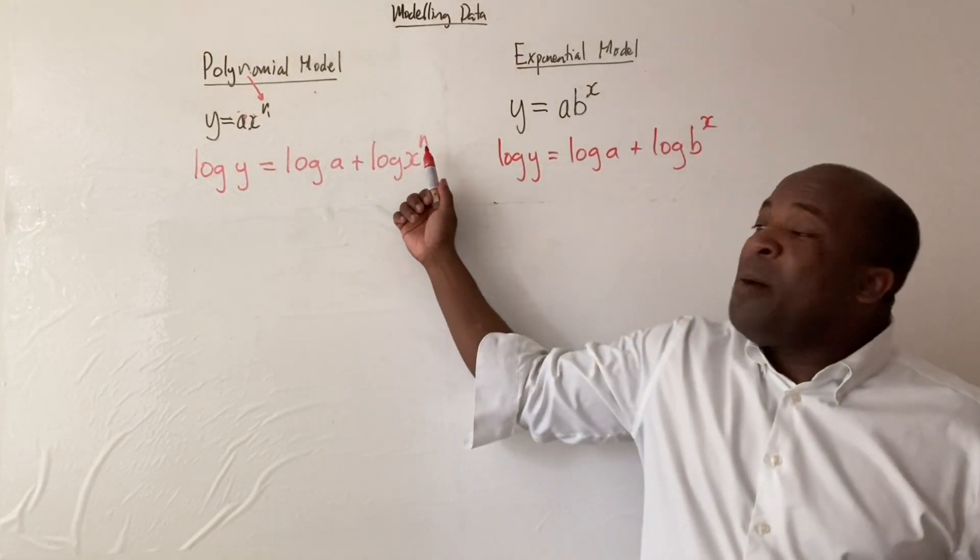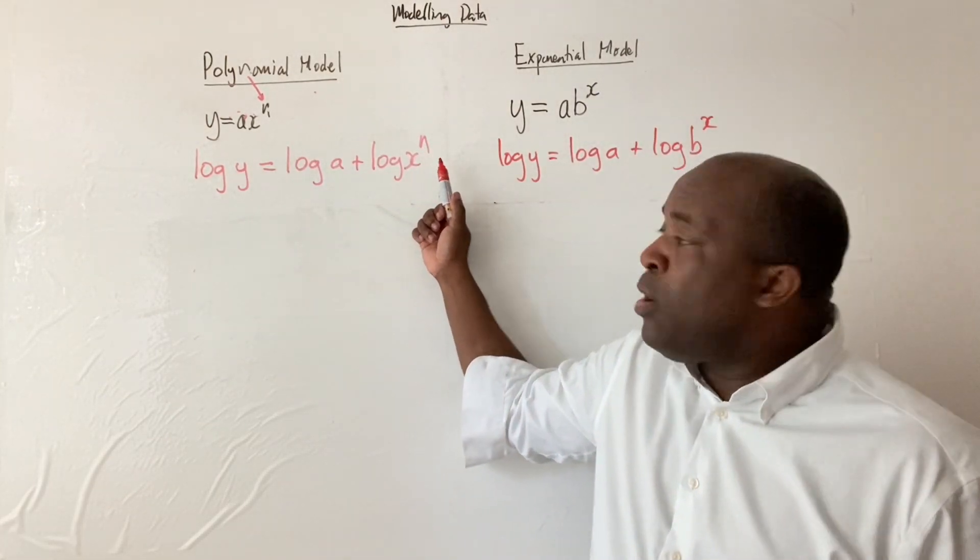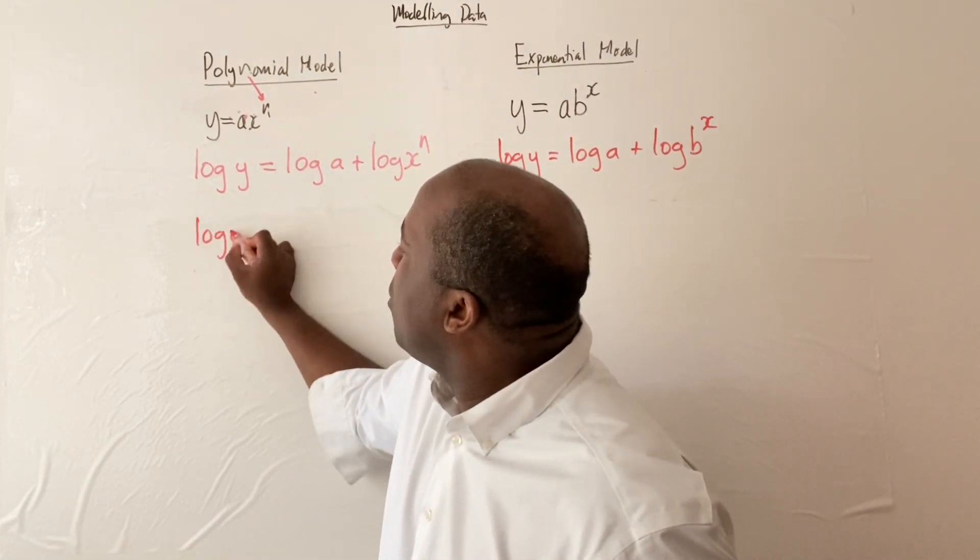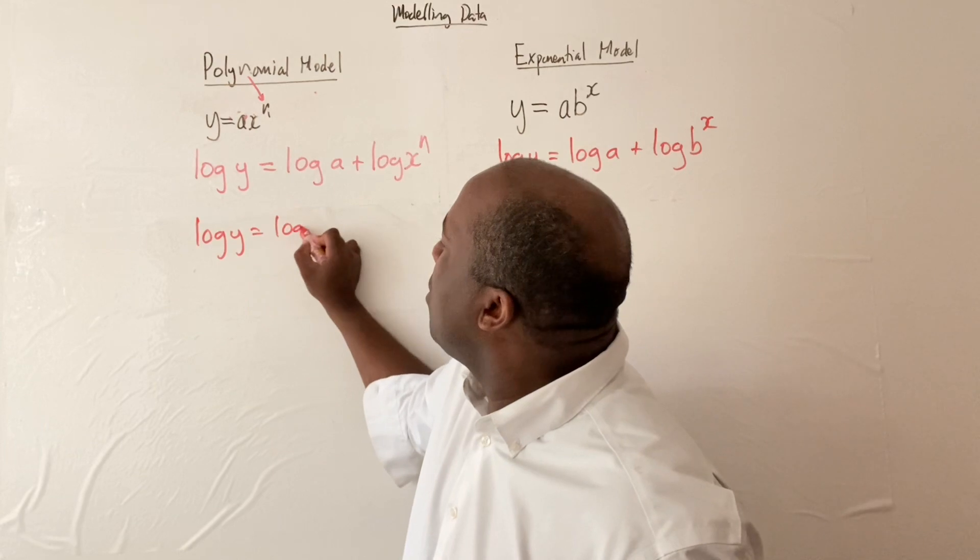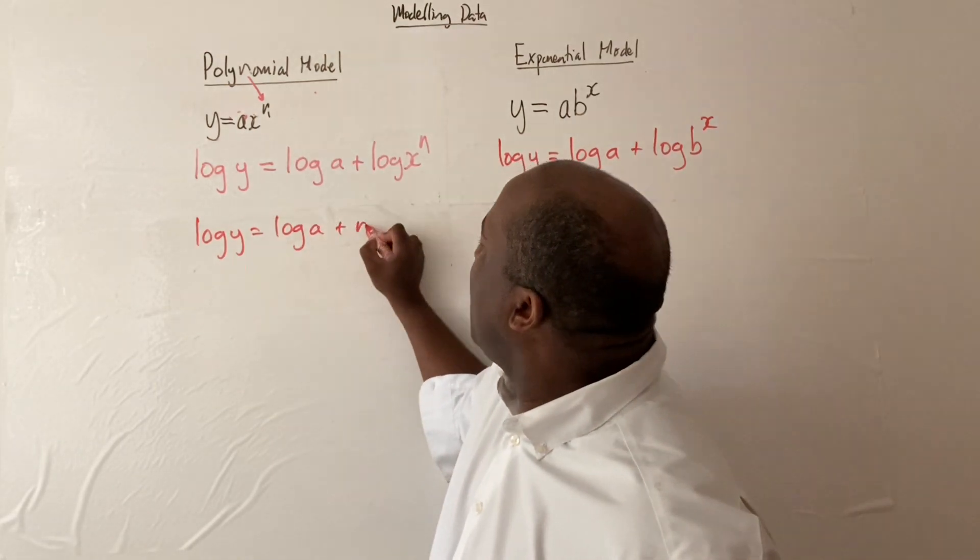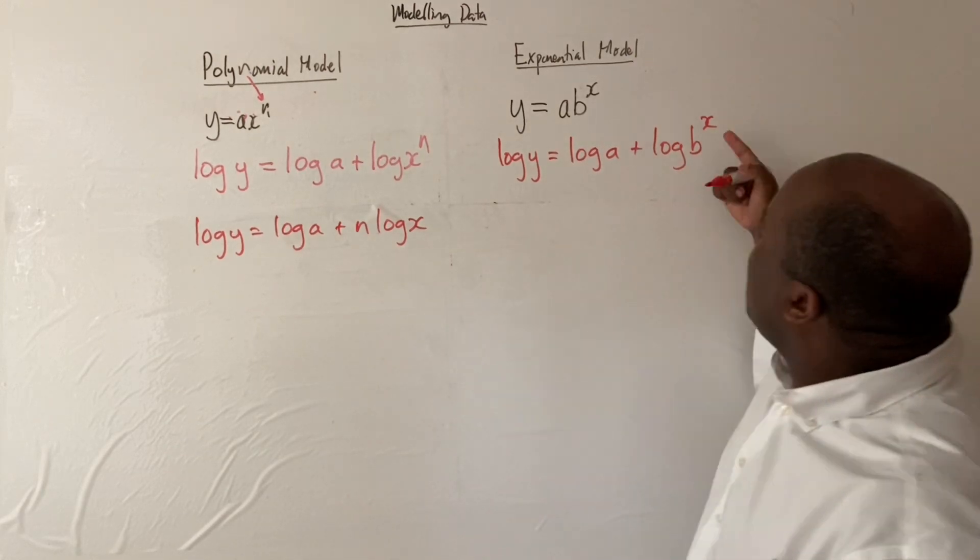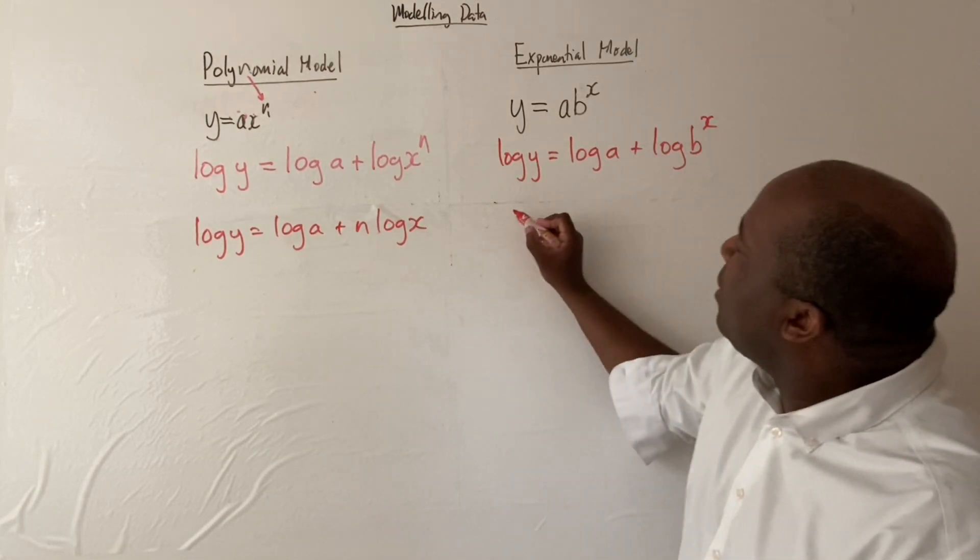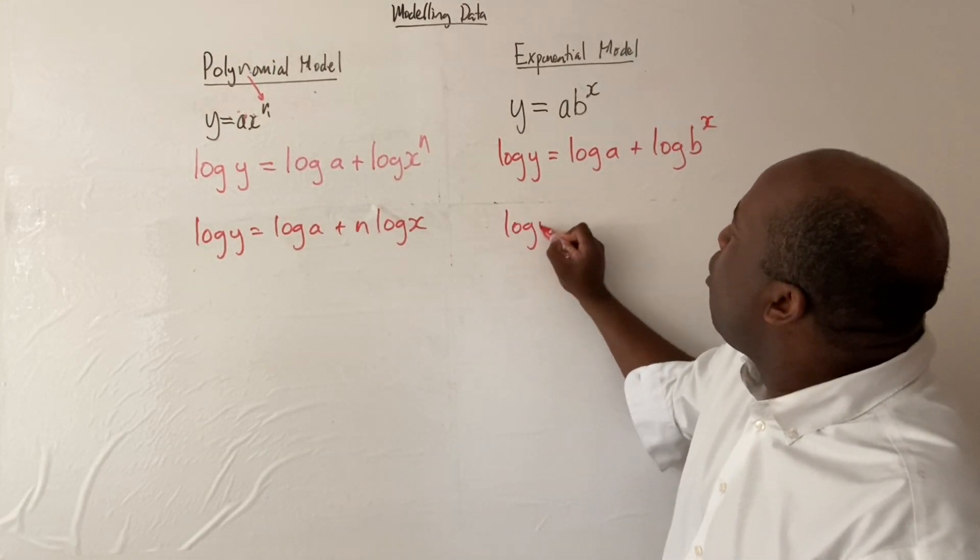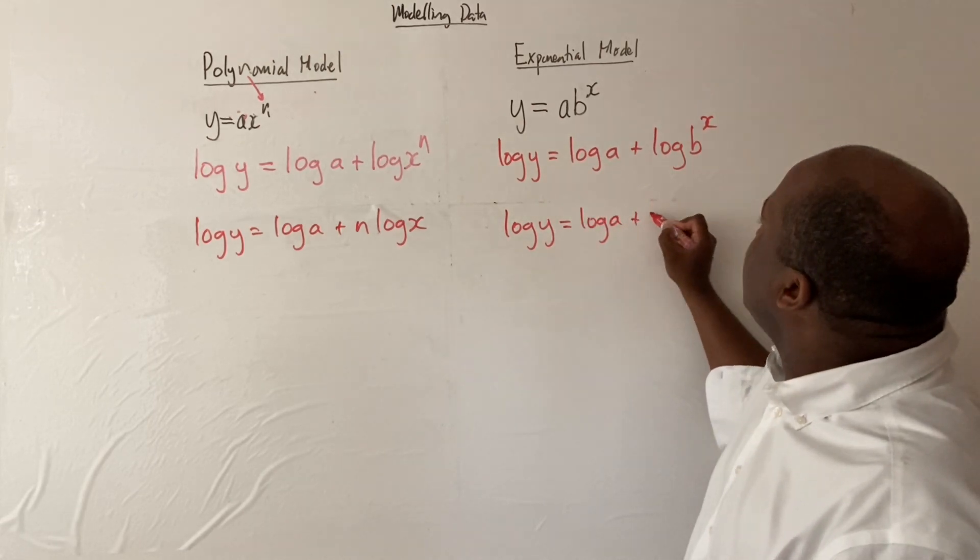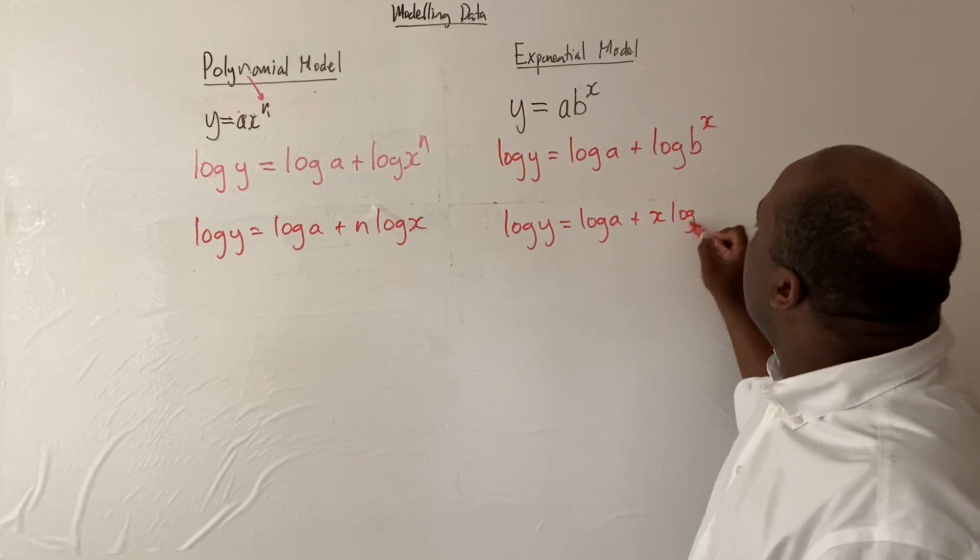Here we can now apply the power rule in logs. We can bring n to the front. So we're going to have log y equals log a plus n log x. Similarly, invoking the power rule here, we have log y equals log a plus x log b.